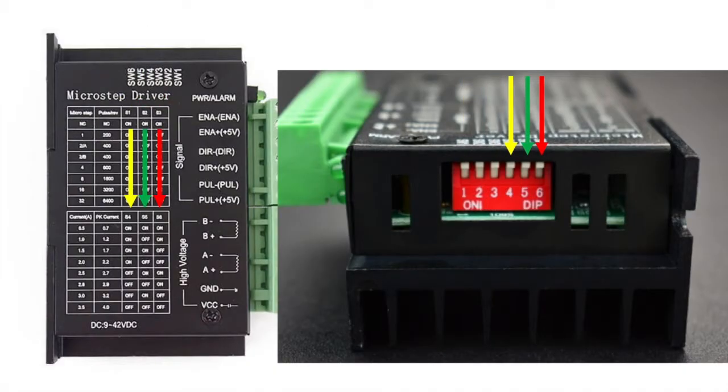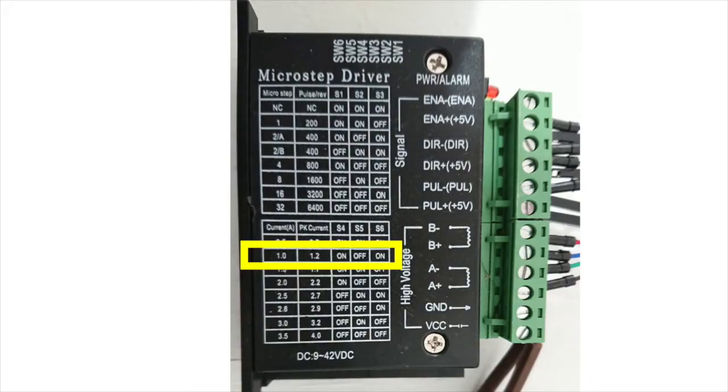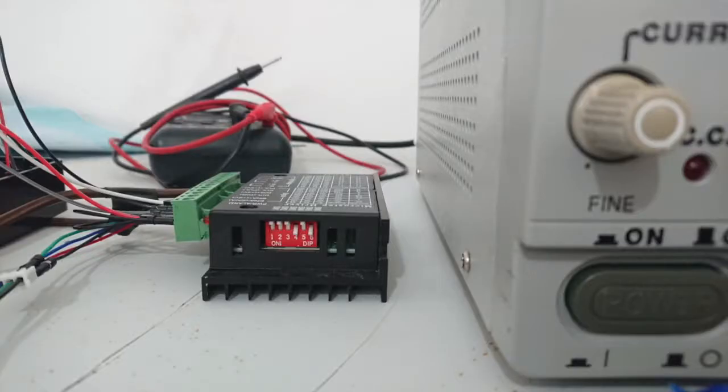The second three dip switches set the current rating of the system. My power supply can give up to one amp, so I'm going to set my dip switches to one amp. This means I need to set the switches to on, off, on.